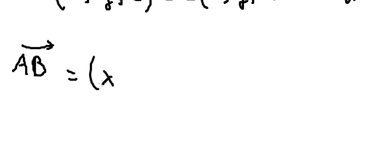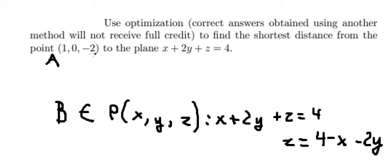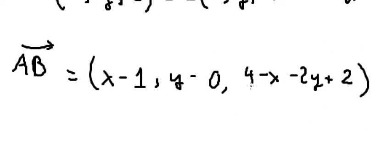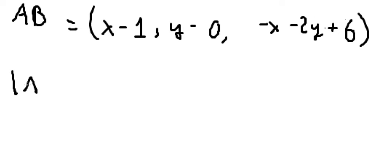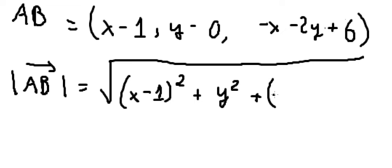For the z-component of vector AB, substituting z = 4 − x − 2y gives us (4 − x − 2y + 2) = (6 − x − 2y). Now we find the magnitude of vector AB, which is the square root of (x − 1)² + y² + (−x − 2y + 6)².